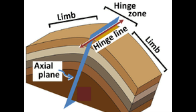The next part is the axial plane. The axial plane is an imaginary plane which divides the fold into two halves by passing through the hinge line. Similarly, just as the hinge may be vertical, inclined, or horizontal, the axial plane may also be inclined, vertical, or horizontal.